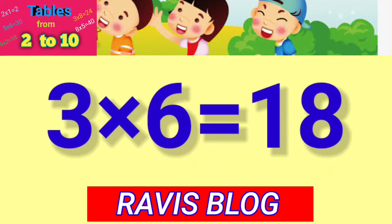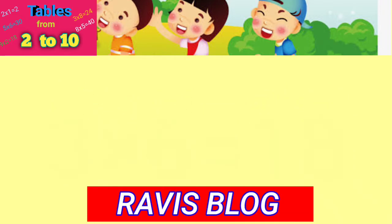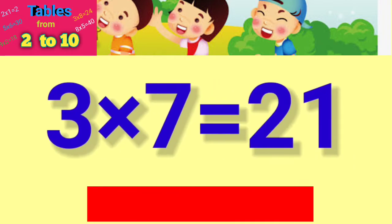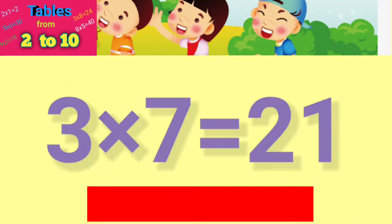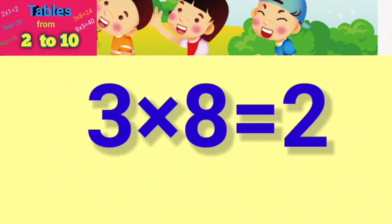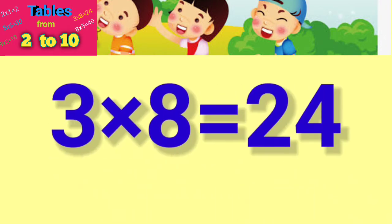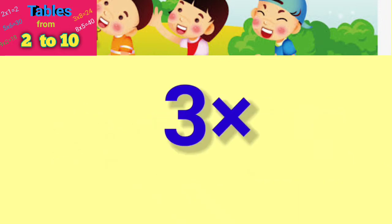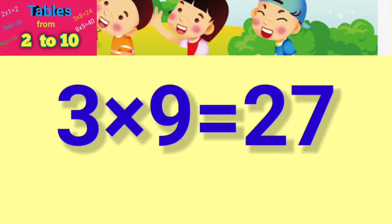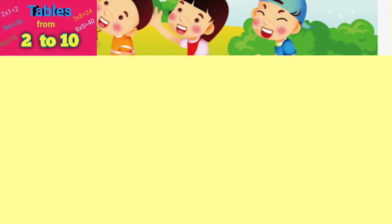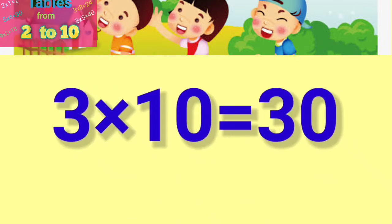3×6=18, 3×7=21, 3×8=24, 3×9=27, 3×10=30.